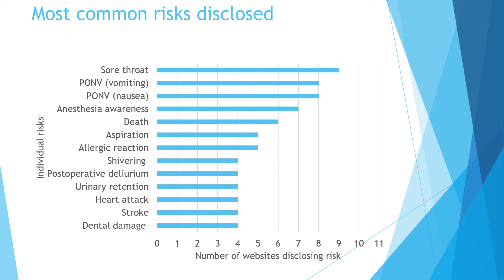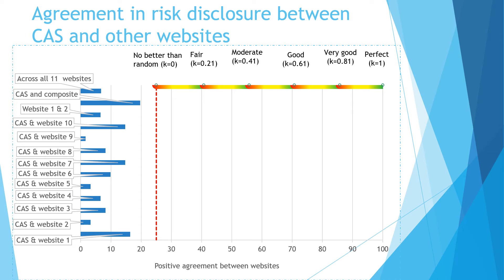This figure shows numerous metrics of positive agreement: between all 11 websites, between the CAS and a composite of Google search results, between the CAS and each website individually, and between the top two Google search results themselves. Positive agreement was only 6.7% between all 11 websites, while negative agreement was 62% across all 11 websites. This shows that websites demonstrated good agreement about what risks should not be included — good negative agreement — and absolutely terrible agreement about what risks should be included.